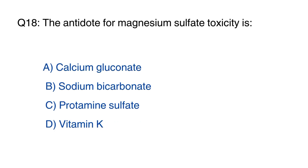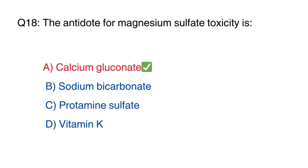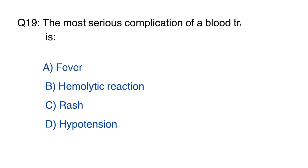Question 18: The antidote for magnesium sulfate toxicity is? The right option is option A, calcium gluconate.